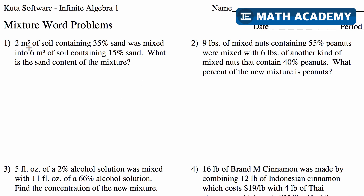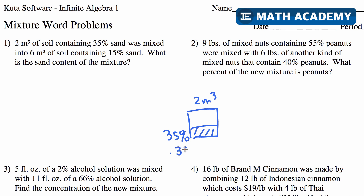This says 2 cubic meters of soil containing 35% sand. So I'm going to draw that first. Here's our 2 cubic meters — it's got 35% sand. So how much sand is that? That's going to be 0.35 times 2, which is 0.7 cubic meters of sand in here.